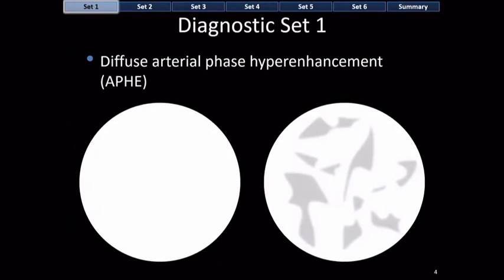Let's start with diagnostic set number one: diffuse arterial phase hyperenhancement. Just a warning — there are six diagnostic sets we will review, and this one is by far the longest. So if in 20 minutes or so we're still on diagnostic set number one, please do not panic. My lecture will not be four or five hours long.